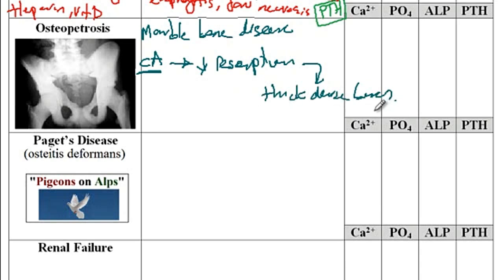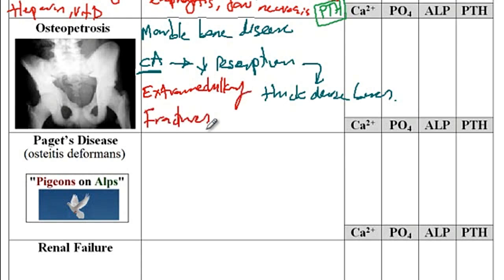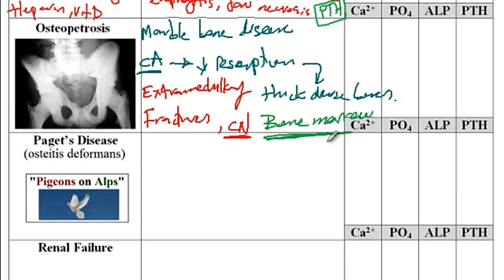Since the bones keep on growing, there would be less space for the bone marrow. These patients will usually have anemia, resulting in extramedullary hematopoiesis, where the body starts making hemoglobin inside the liver since there is not enough space in the bone marrow. There are also more fractures due to problems with bone remodeling, and there is impingement on the cranial nerves causing narrowing of the foramina. Since the problem is with osteoclasts, bone marrow transplantation is curative.